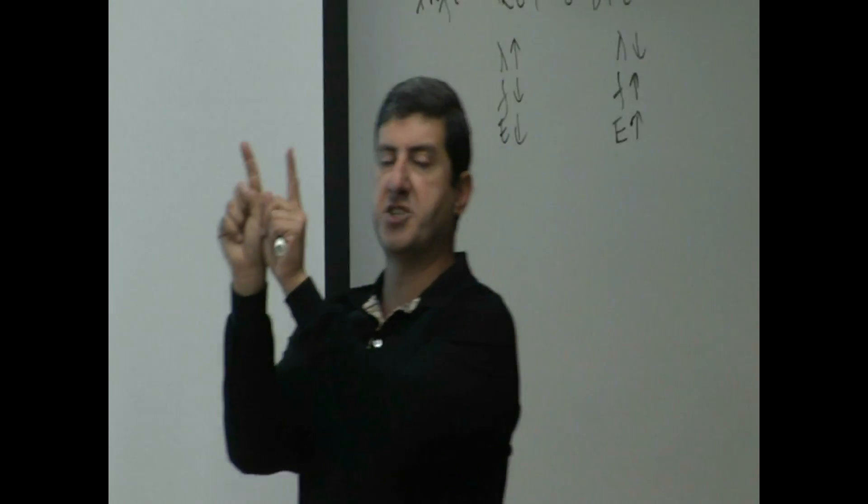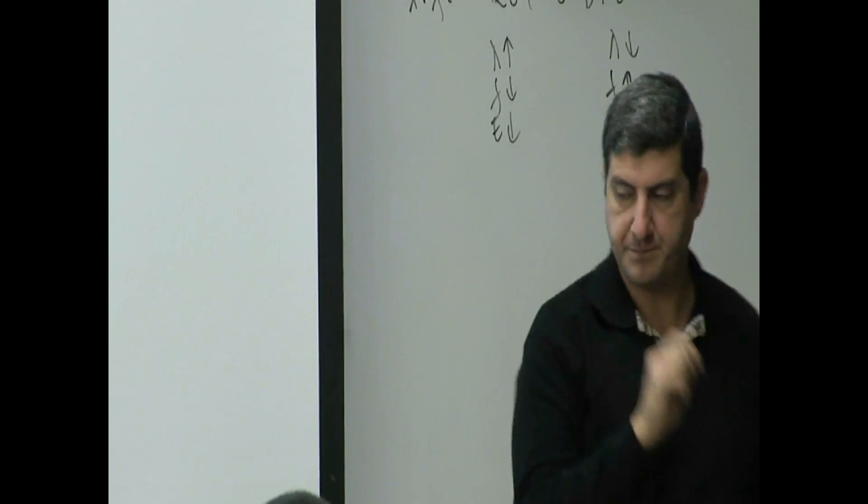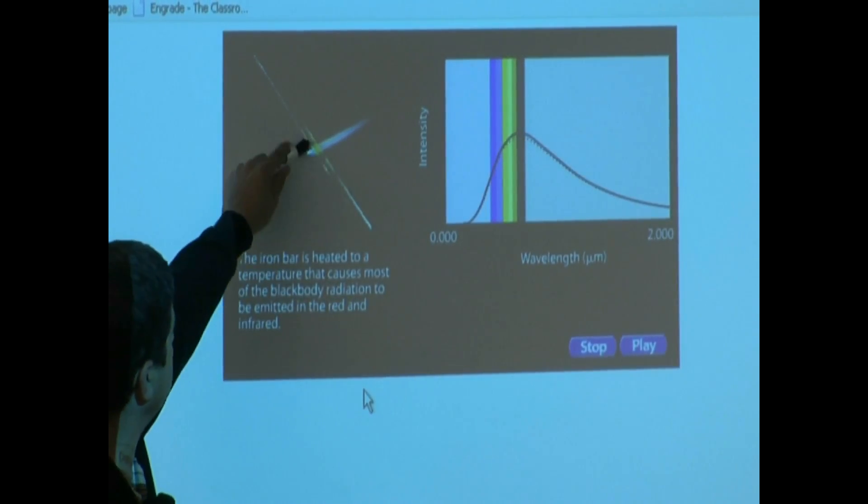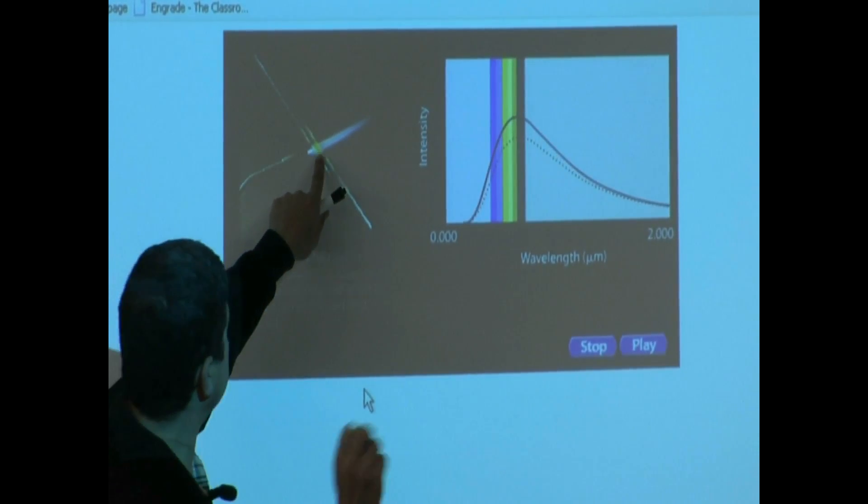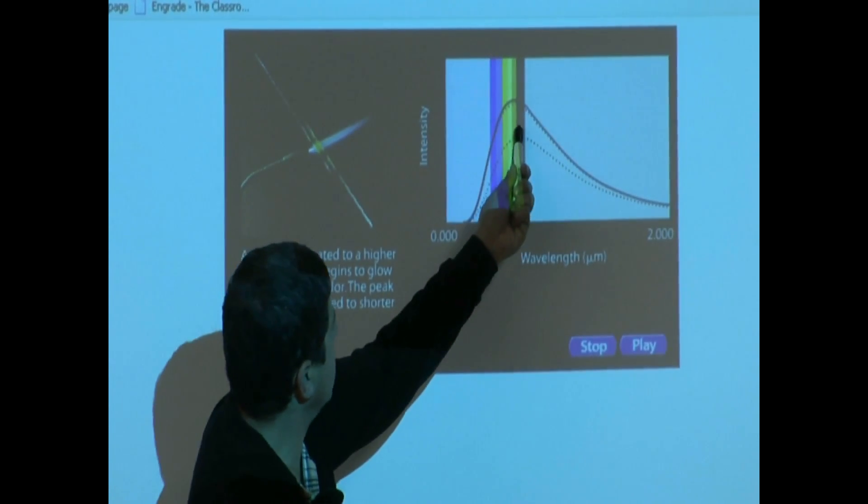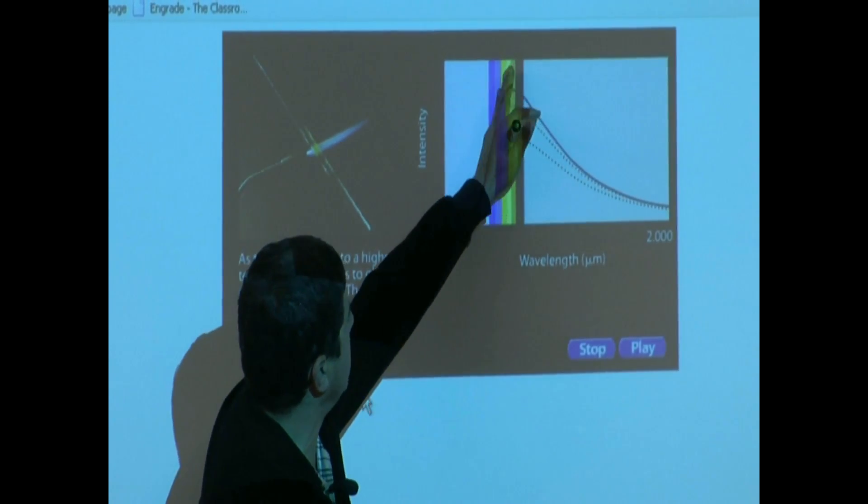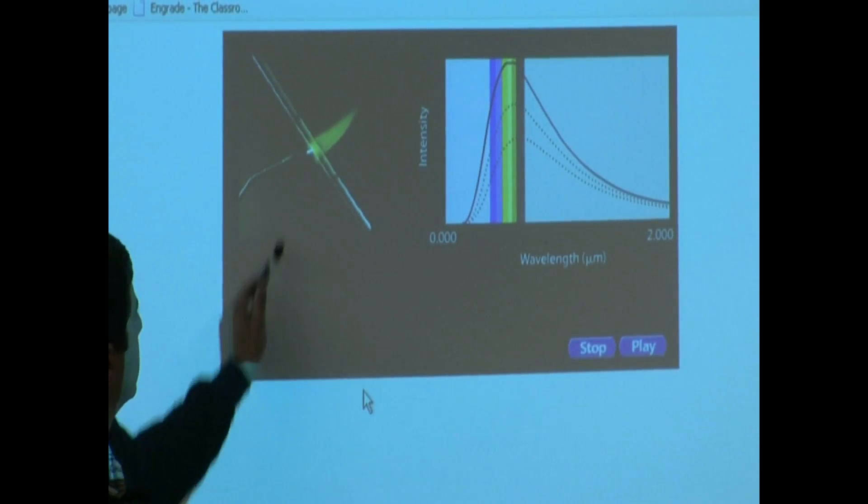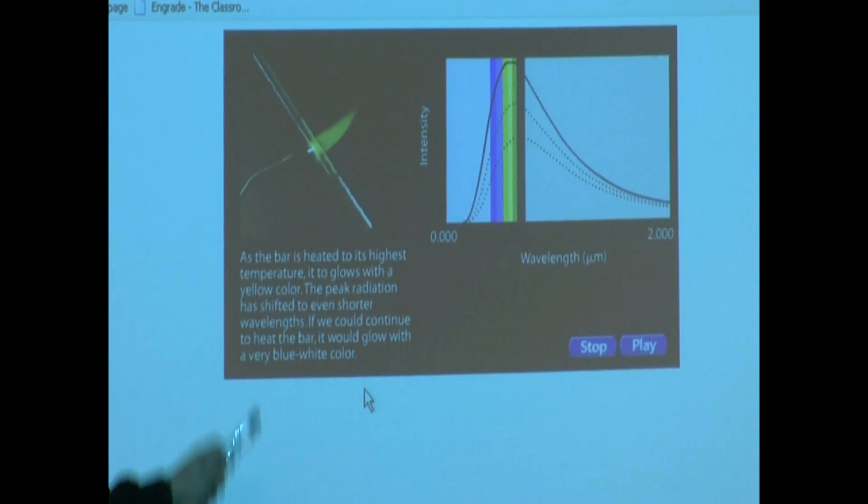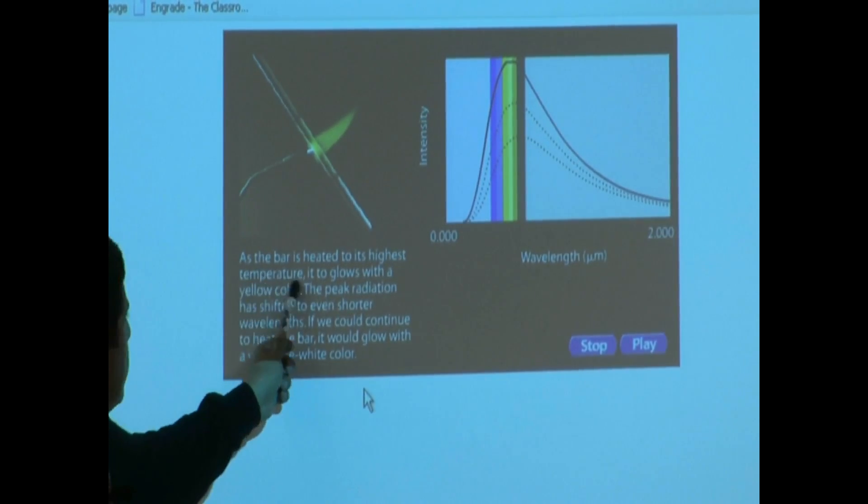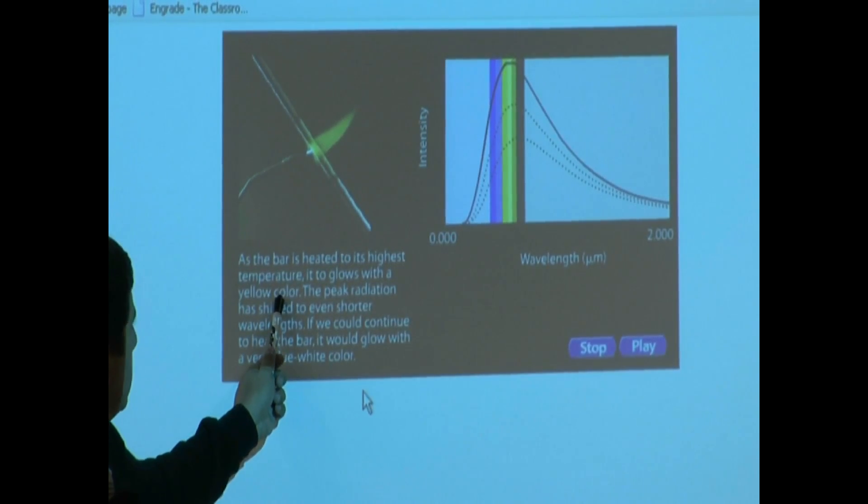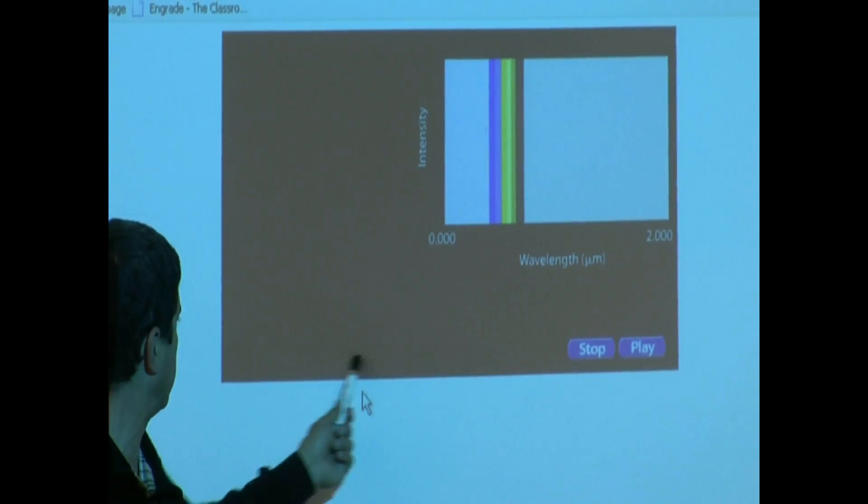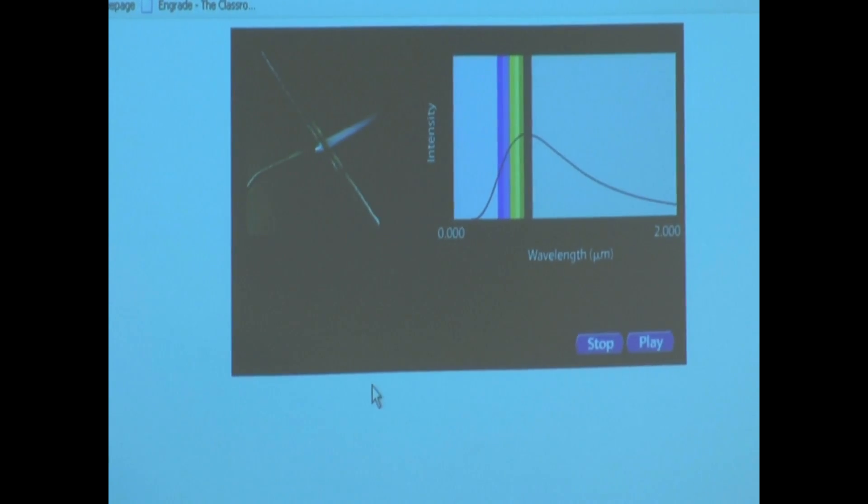The bar is heated to a temperature that causes most of the black powder radiation to be emitted in the red. See, it's glowing red right now. Now, they're making it hotter. Keep making it hotter. It starts glowing more, and the peak starts shifting to the left. The peak radiation has shifted to shorter wavelengths. Now, it's looking yellow.